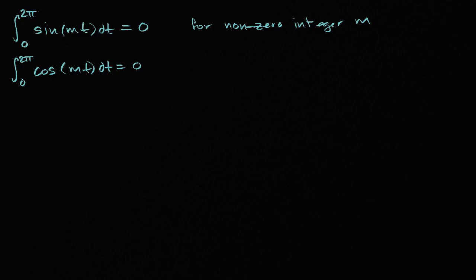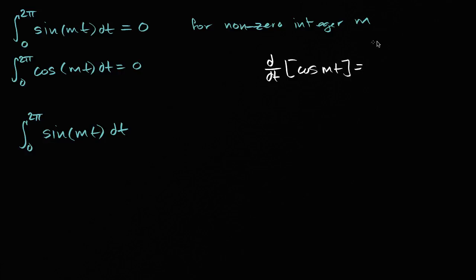So let's first do this top one. Let me just rewrite the integral. So we're gonna take the integral from zero to two pi of sine mt dt. Now we wanna take the anti-derivative of sine of mt. So we know that the derivative with respect to t of cosine mt is equal to, what is this?